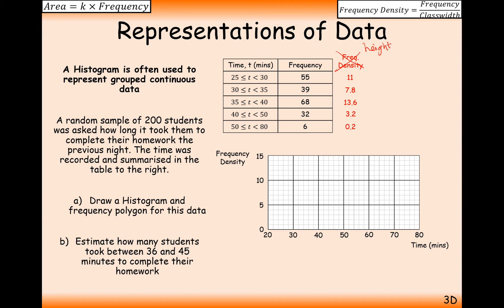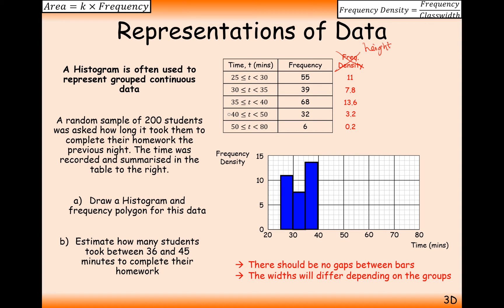So what we'll get here is frequency density up to potentially 11. And then for the first bar, we're going to have a bar in between 25 to 30 with a height of 11. So there should be no gaps in your bar because there are no gaps in this grouped data here. The next bar is going to be in between 30 to 35 with a height of 7.8, 35 to 40 of 13.6 height. And 40 to 50, we're going to have a height of 3.2. And from 50 to 80, we're going to have a height of 0.2.